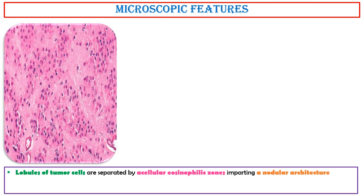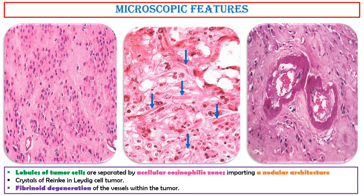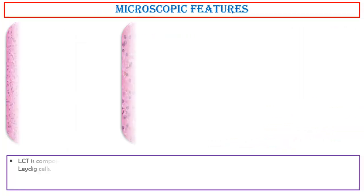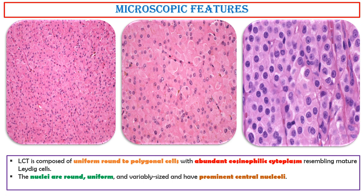Microscopic features. Lobules of tumor cells are separated by a cellular eosinophilic zones, imparting a nodular architecture. Crystals of Reinke in Leydig cell tumor can be seen in this photo. Fibrinoid degeneration of the vessels within the tumor can be seen. Leydig cell tumor is composed of uniform round to polygonal cells with abundant eosinophilic cytoplasm, resembling mature Leydig cells. The nuclei are round, uniform, and variably sized, and have prominent central nucleoli.